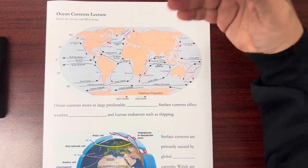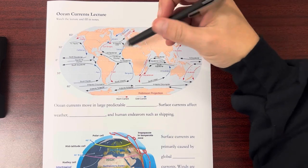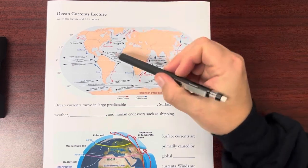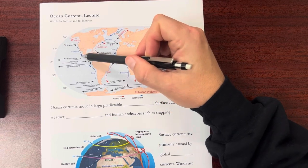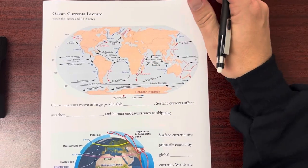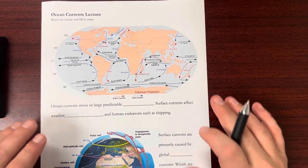These are currents that are up near the top of the water column. So we see some different color ones like Gulf Stream is red because that's a warm current. The California current is blue because that's a cold current. And these are going to have effect on lots of different things.